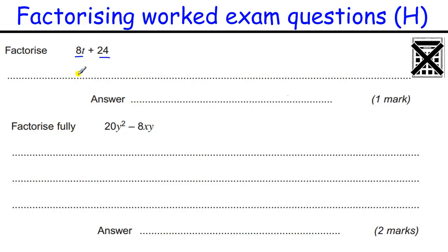OK, lots of these simple ones. What goes into 8 and 24? Always look for the biggest factor. Quite a common mistake here. I've used 2 or 4. But 8 goes into both of these. And 8 times t is 8t. 8 times 3 is 24.